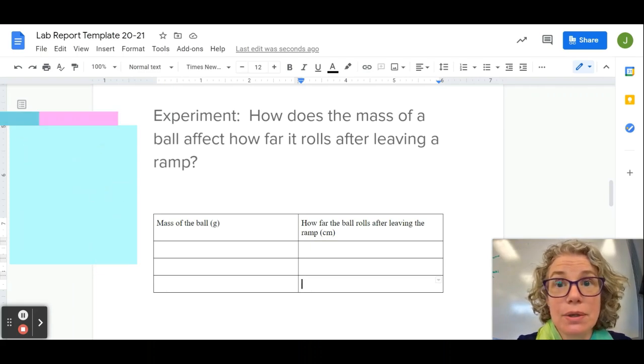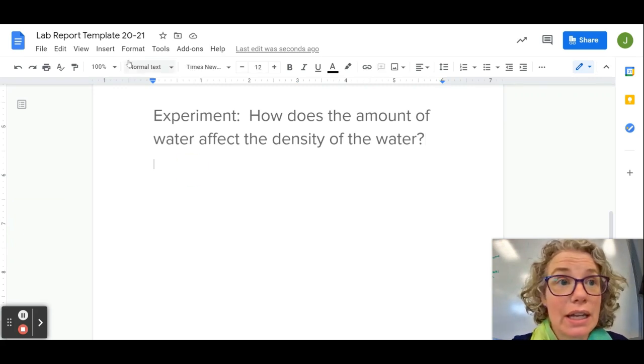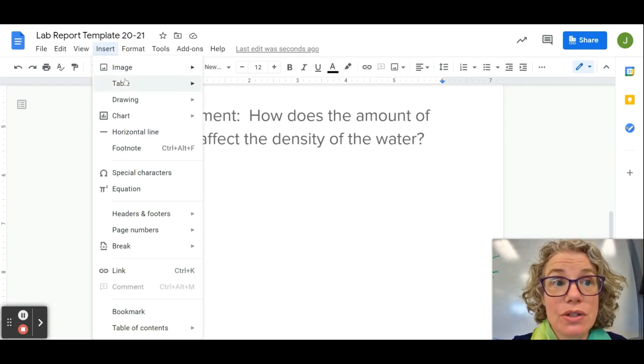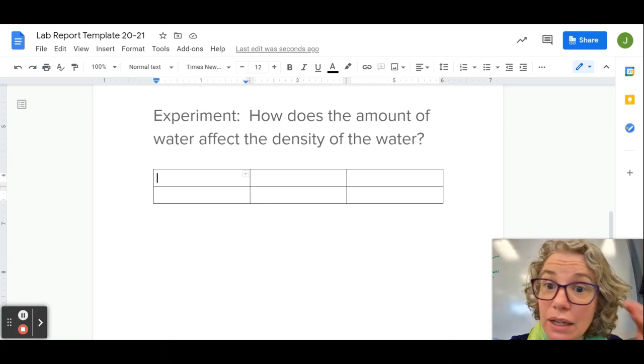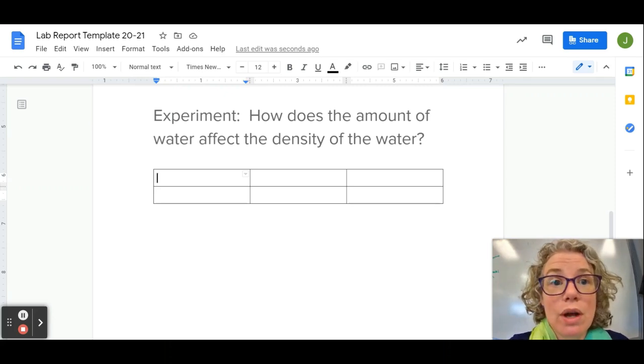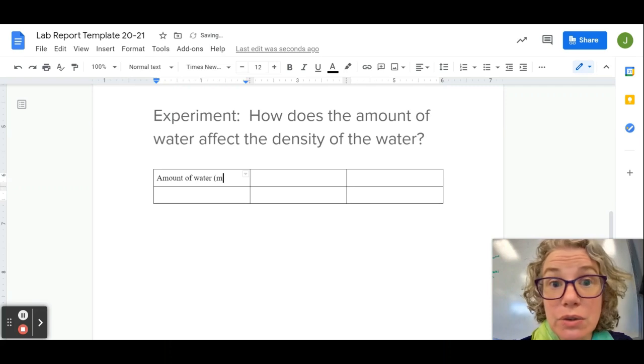Let's look at another example. Let's assume that this was our question that we needed to make a data table for. Again, I recommend we go to Insert, Table and just start with some boxes. How does the amount of water affect the density of the water? What is it that I the scientist am changing? I'm going to change the amount of water, so that's my independent variable. It should go in this first column: amount of water. I need a unit, milliliters.